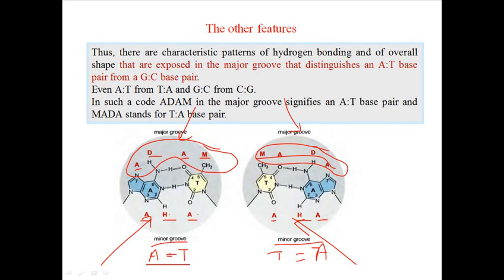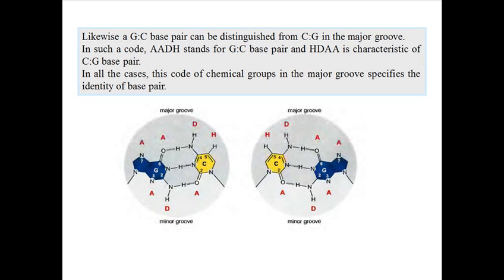That is why we can say the major groove contains more chemical information than the minor groove — that is a very important part of this lecture. The major groove is rich in chemical information. In the case of GC pairs this is also true: through the minor groove the pattern is ADA in both cases, while the major groove patterns are different. This is why it is very important to understand the characteristics of DNA-binding in terms of the major groove.